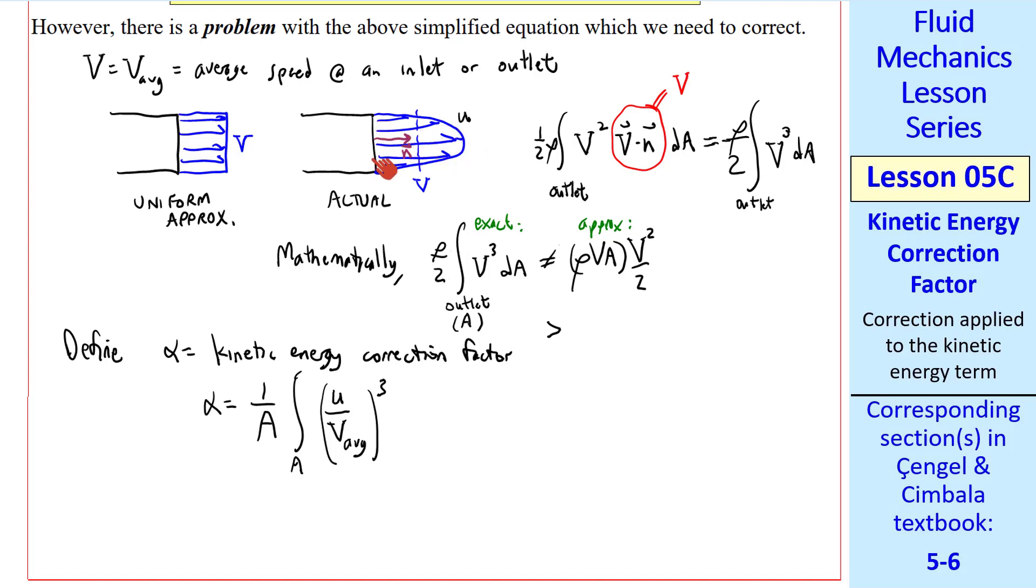where I'm defining u as the component of velocity in the direction of n, perpendicular to the outlet. So we're calling this u³ in this integral, which is the same as this integral. So this is our kinetic energy correction factor, where u is the velocity component perpendicular to area A.